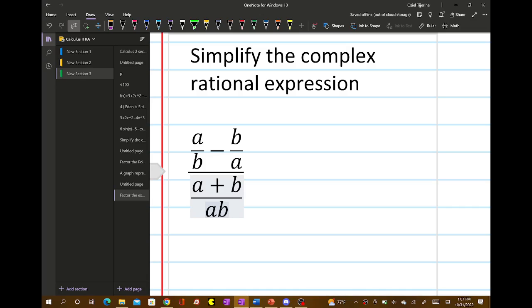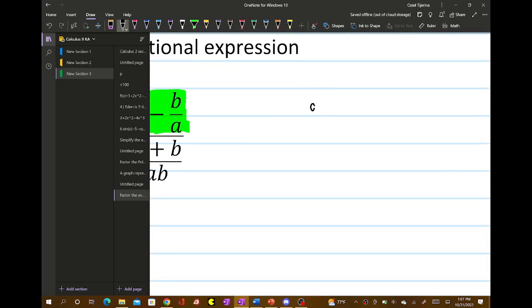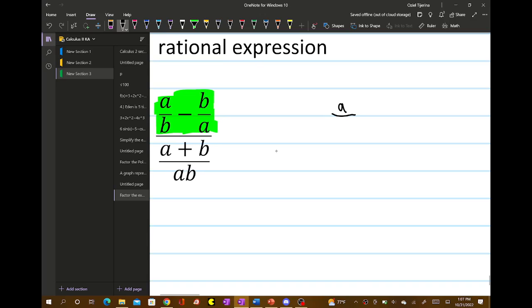So basically, I'm going to first look at this part here, and I'm going to write it down. So I have a over b minus b over a.